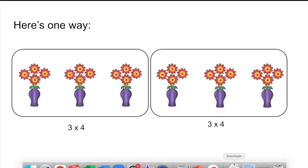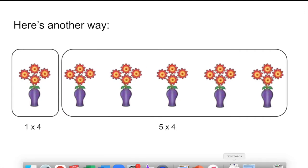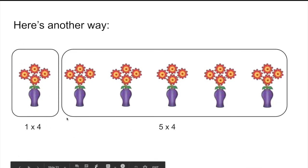There's more than one way you could have done it. You could have thought about the six as two groups of three. That would give you three times four and three times four. You could have also thought about it as a group of just one and a group of five: five times four for these flowers and one times four for the leftover group.